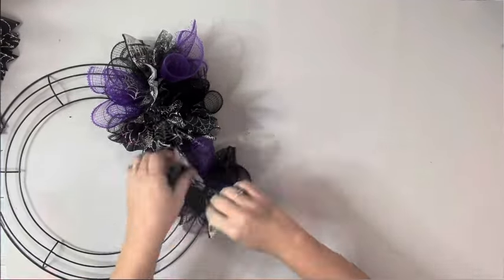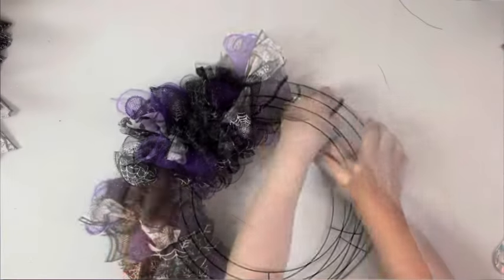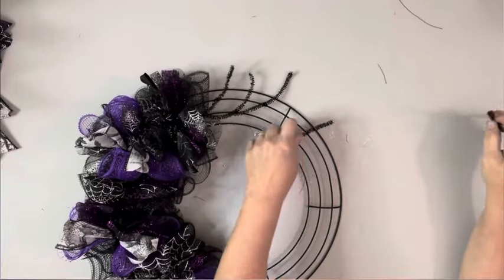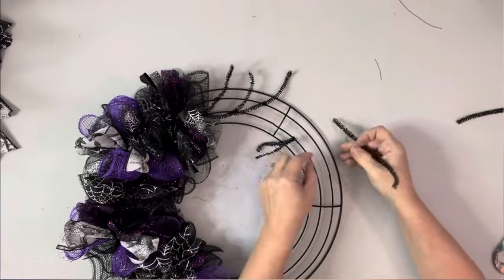And that is what one section looks like when it's completed. And then to make it a little easier, I went ahead and started adding the pipe cleaners ahead of time to show you where their placement is. So they'll alternate.